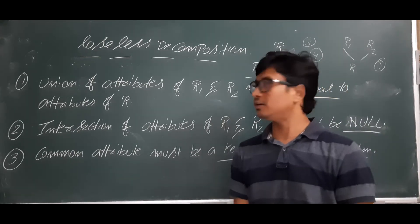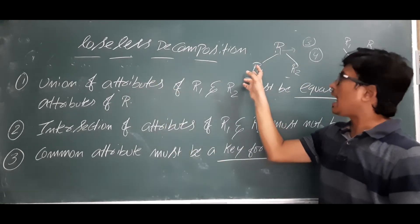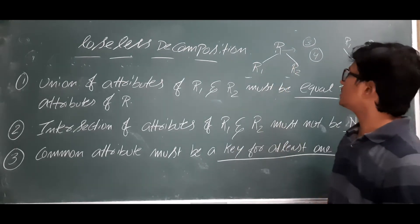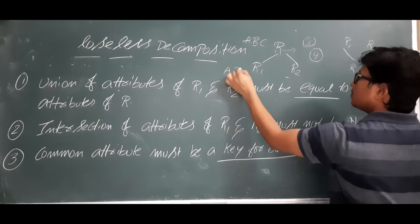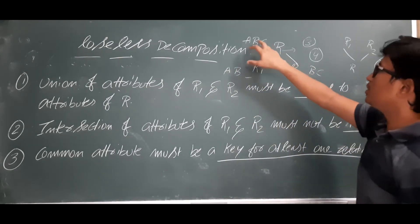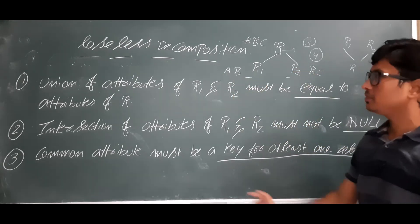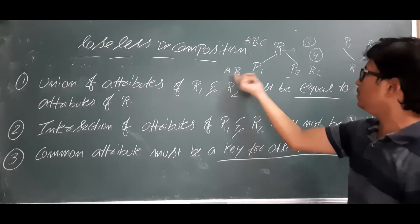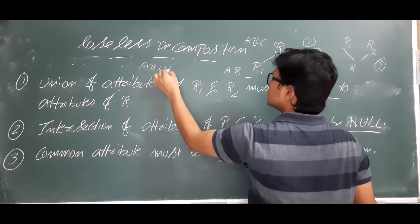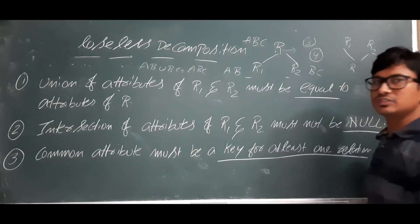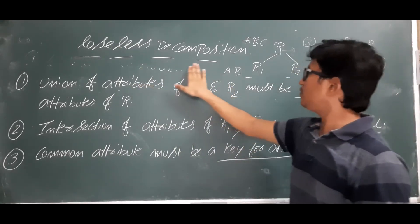Let me discuss the three rules. Rule 1: Union of attributes — after decomposing, the union of attributes of R1 and R2 must equal the attributes of R. For example, if original relation R has attributes A, B, C, and after decomposing R1 has attributes A, B and R2 has attributes B, C, then AB union BC equals ABC, which equals the attributes of R. So the first condition is satisfied.